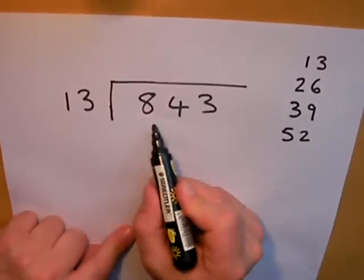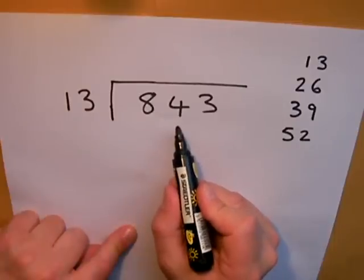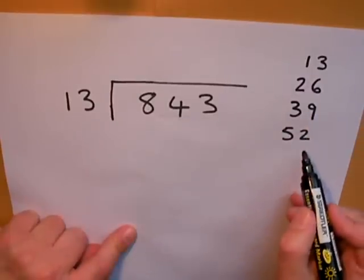So the first thing I'm going to say is 13 into 8—well that doesn't go, so I'm going to go straight across now and start with 13 into 84. Now my times table will tell me that I can make 84.